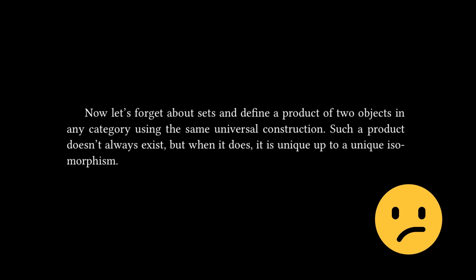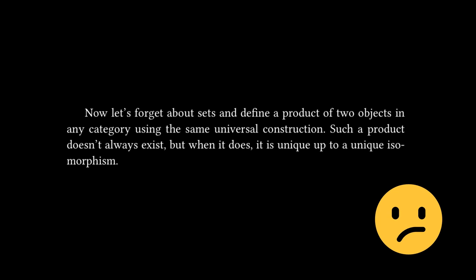But if you read back into the earlier text, it actually defines what a unique isomorphism is. When it says the initial or terminal object was unique up to isomorphism, it meant that any two initial or terminal objects are isomorphic. There's a great blog article that I'm going to link when we get to the challenges that goes into this step by step with a lot of detail, which I found really useful in understanding this.